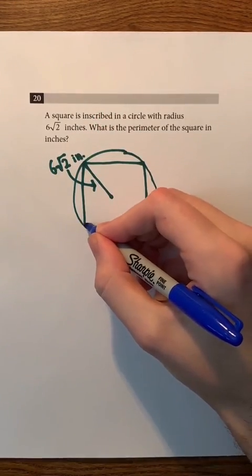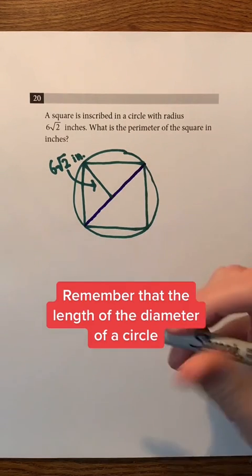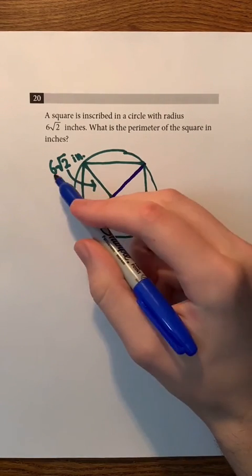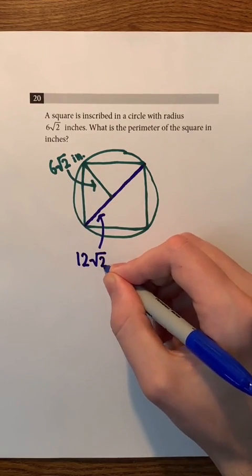Notice that we can draw this diameter of the circle that also goes through these two corners of the square. Remember that the length of the diameter of a circle is 2 times the length of its radius. So, the length of the diameter of this circle must be 2 times 6 times the square root of 2 inches, which is just 12 times the square root of 2 inches.